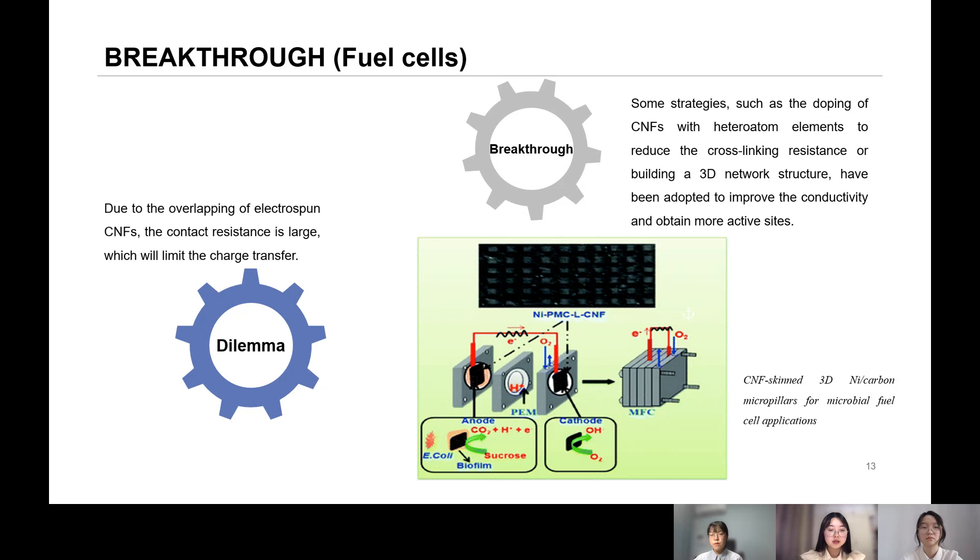Due to the overlapping of electron spawn, CNF, the contact resistance is large, which will limit the charge transfer. This is the dilemma for the CNF in fuel cells. However, with the introduction of 3D structure combined with CNF, this problem will be solved. Some strategies such as building a 3D network structure have been adopted.